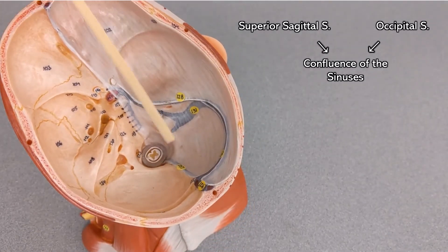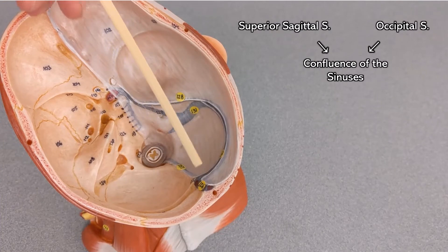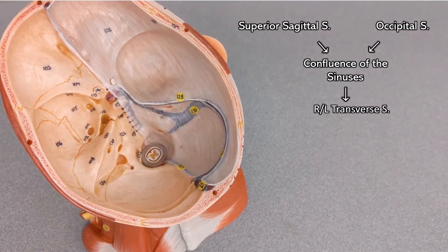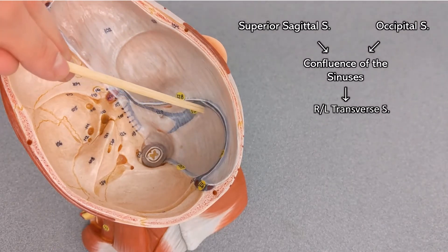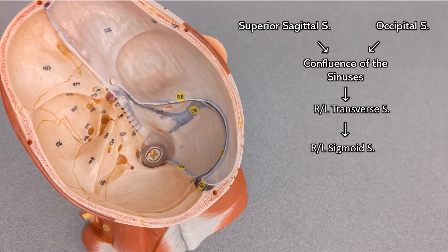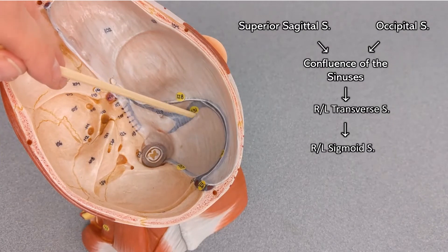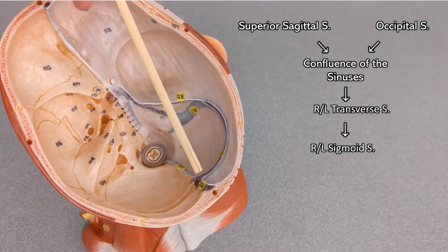So the blood from the confluence of the sinuses will flow out through the right and left transverse sinuses to eventually reach this which is the sigmoid sinus. So remember sigmoid is anything that's making like an S shape, transverse side to side.